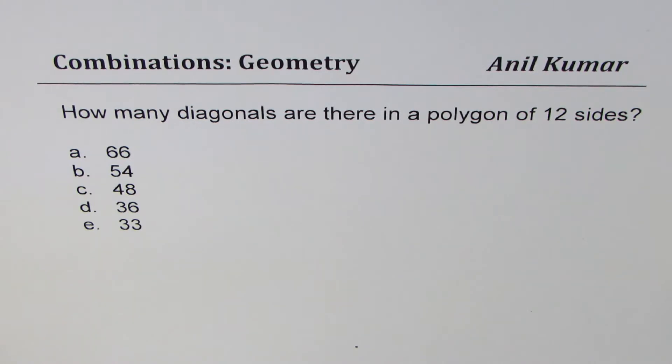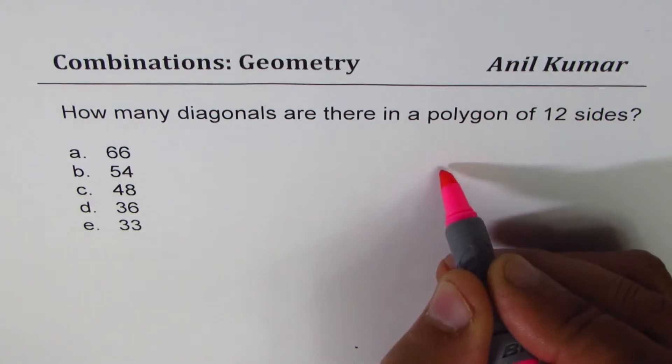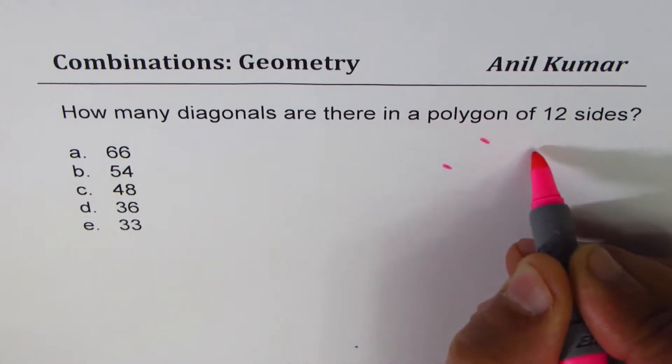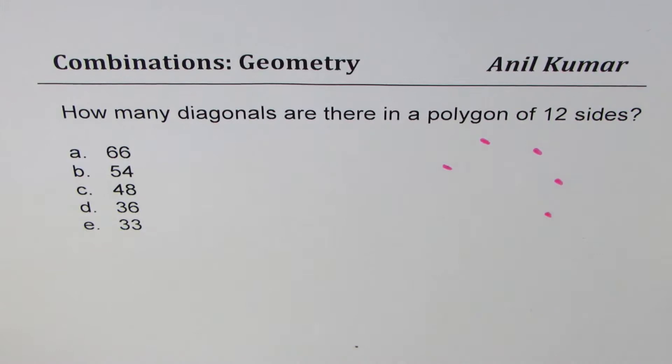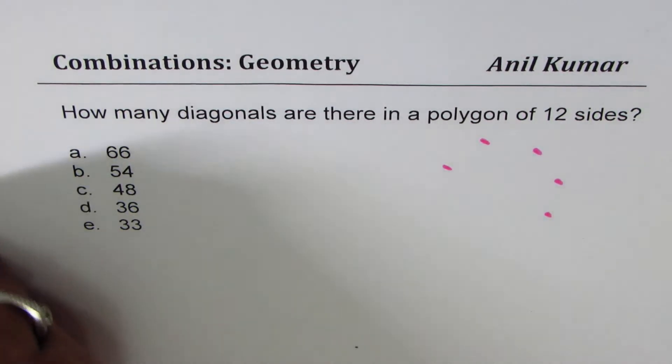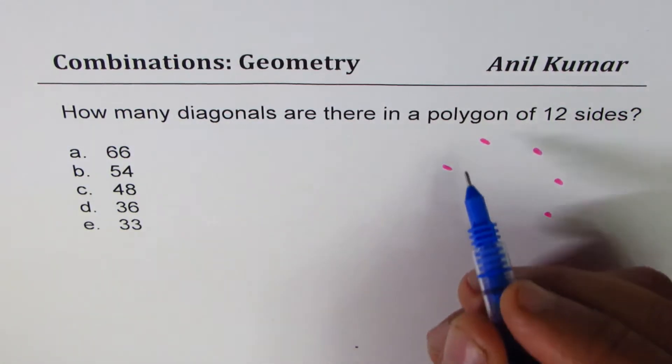I'll give you a brief description of finding the answer which will help you to answer similar questions. Let's consider a polygon with a few sides. I'm not going to take 12 sides, we'll just take a few to understand this strategy. So let's say we have some points here. Now let's join these points. Consider them to be vertices of a polygon.